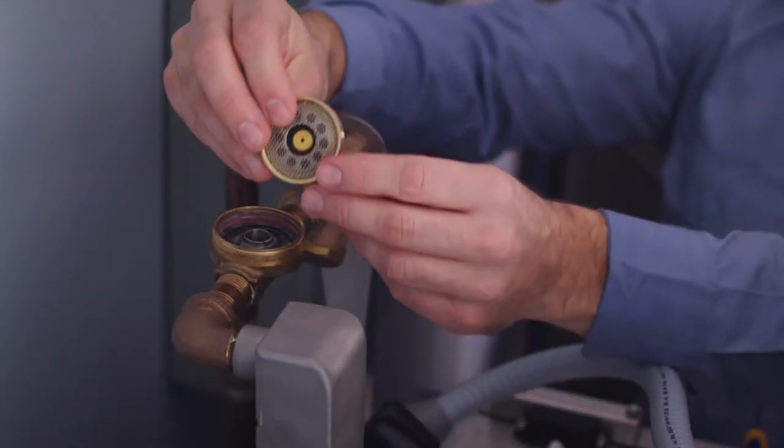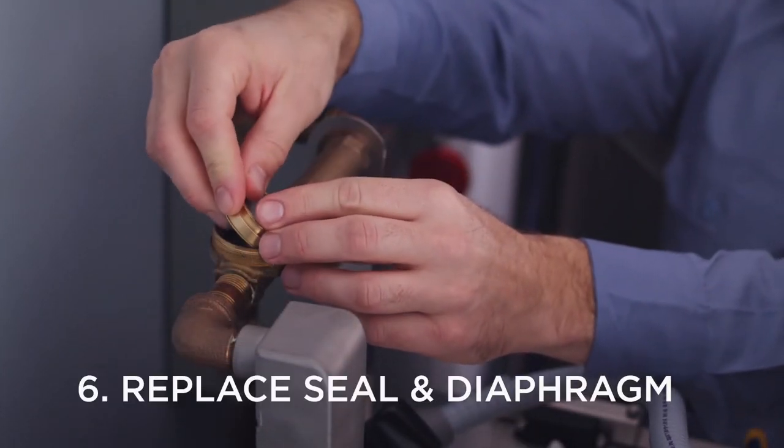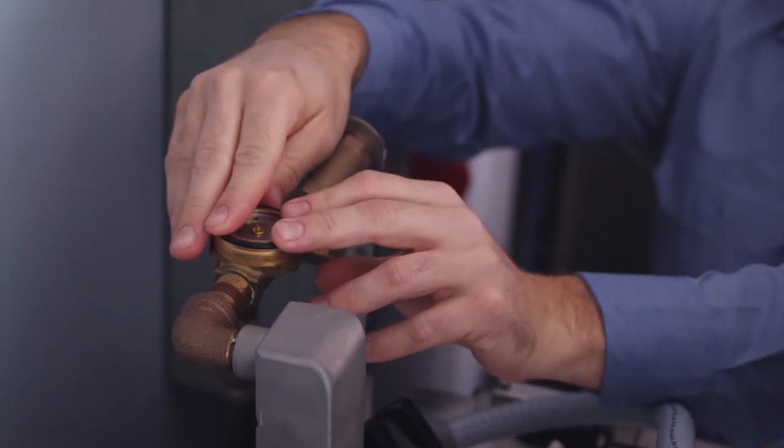Place the new diaphragm cartridge into the valve body with the pilot port extension facing up. Then, set the new O-ring seal into place.